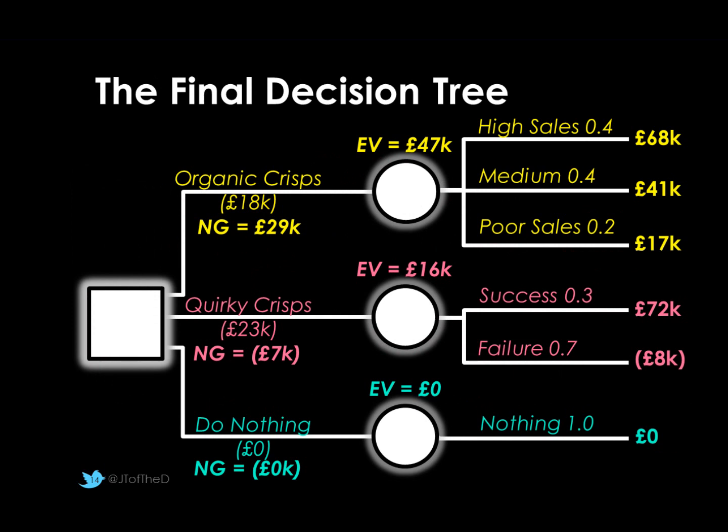So let's summarise. Our decision tree has shown us three options: the organic crisps route gives a net gain of £29,000; quirky crisps gives a net loss of £7,000 — the failure here could be very costly; and doing nothing gives no net gain. A good practice when drawing a decision tree is to put a double mark across the lines of the options you are discounting. This shows that the organic crisp route is probably the most beneficial option.